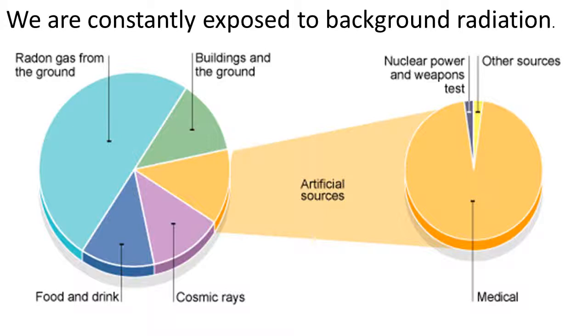So background radiation is something that we can't do anything about. It's hitting our bodies all the time from above and below. You can categorize these as natural or artificial. So natural sources from food and drink or cosmic rays from space, nothing at all you can do about it.